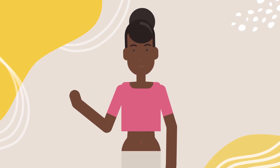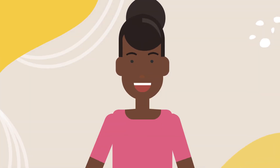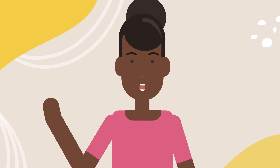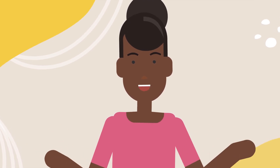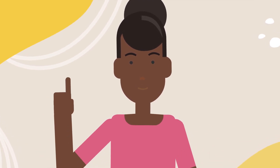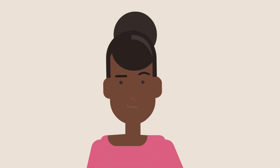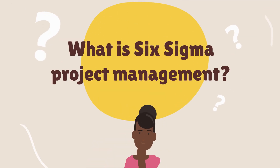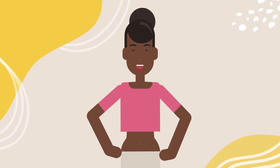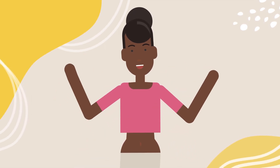Let's talk about Agile in PMP. Agile is a methodology that emphasizes flexibility and adaptability. What is Six Sigma project management? It's a methodology that aims to reduce defects and improve quality.